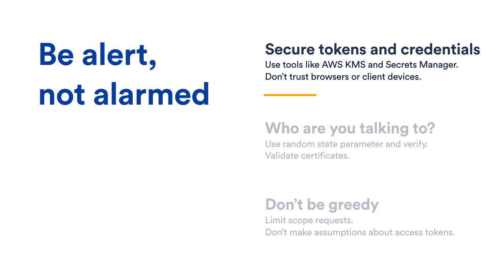Now let's jump into some best practices and tips for API consumers. Firstly, let's talk about security. As part of API access, we deal a lot with tokens and credentials like client IDs and secrets — these are essentially like passwords, so you have to secure them. Things to keep in mind: encrypt them at rest. Luckily, if you're in the cloud, you can use tools like AWS Key Management Service or Secrets Manager to help you do this really easily. And for example, don't put them into your Git repository.